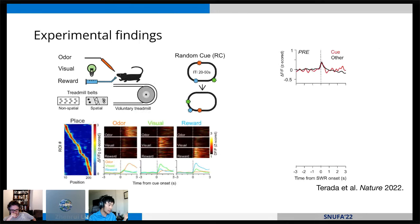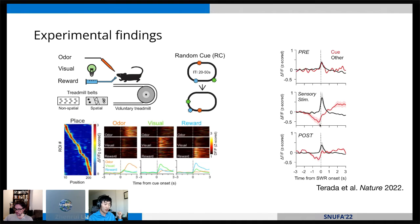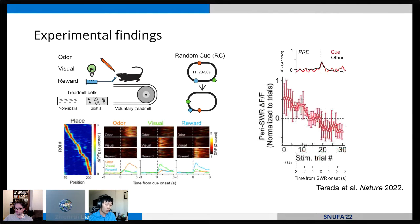But then during experience, the recruitment of these random cue units in red is not only, they're not only not recruited, but they're actually actively suppressed. And this is a durable effect that persists after the task is performed. And this is an effect that accumulates with experience. So with more exposures, with more laps on this trial, on this spatial belt, the animal gradually learns to suppress the activity of these random cue stimuli.